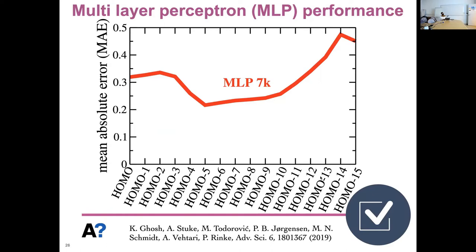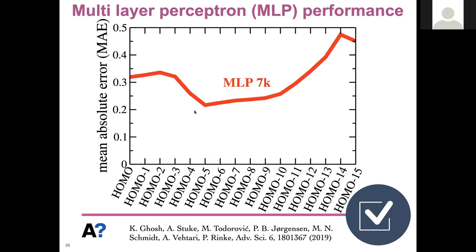This is the result we got: on the x-axis you have the HOMO energy levels — leftmost is HOMO and rightmost is HOMO minus 15 — and on the y-axis you see the mean absolute error in the energy predictions in electron volts. You see that it predicts well in the center, but not so well on the sides. This seems to be an artifact — we could not figure out why it would not perform better on the sides.